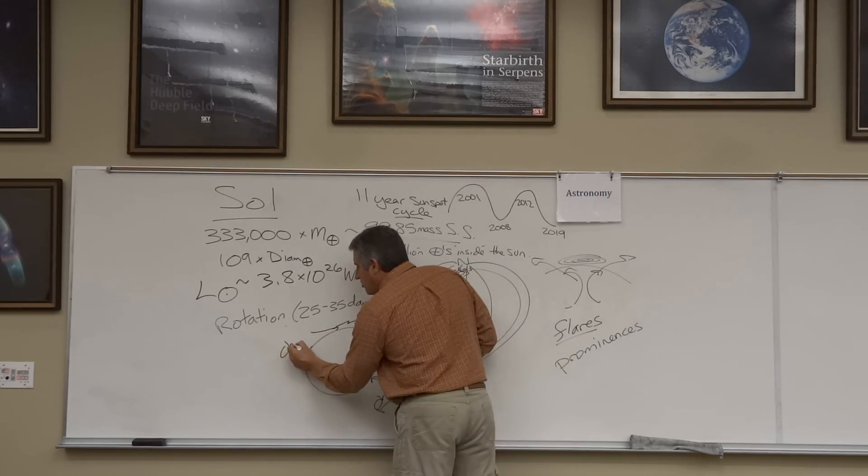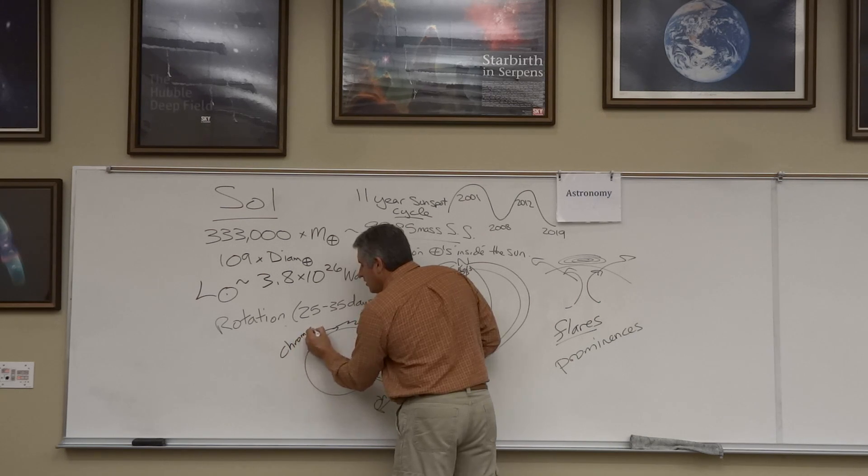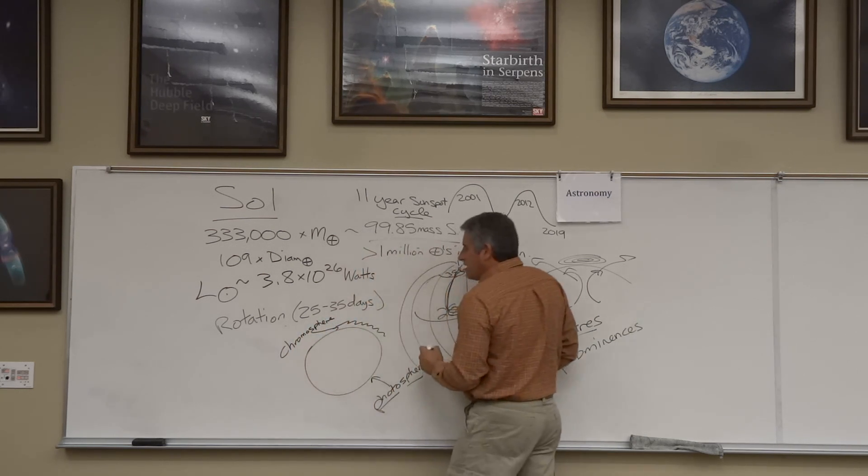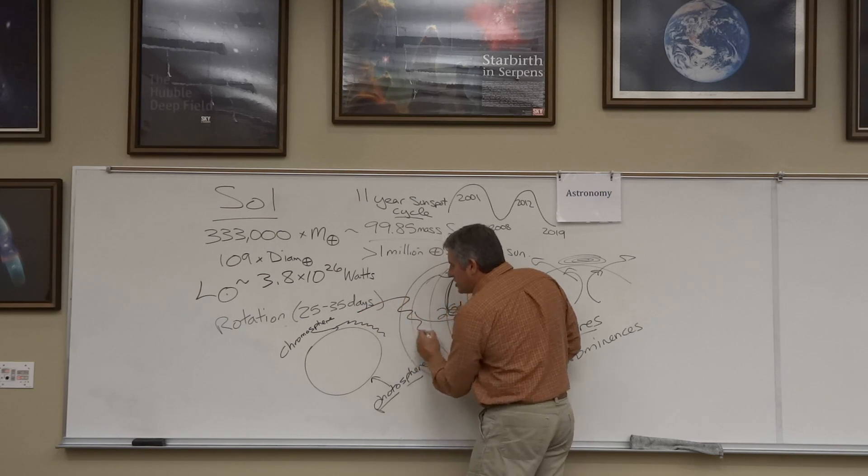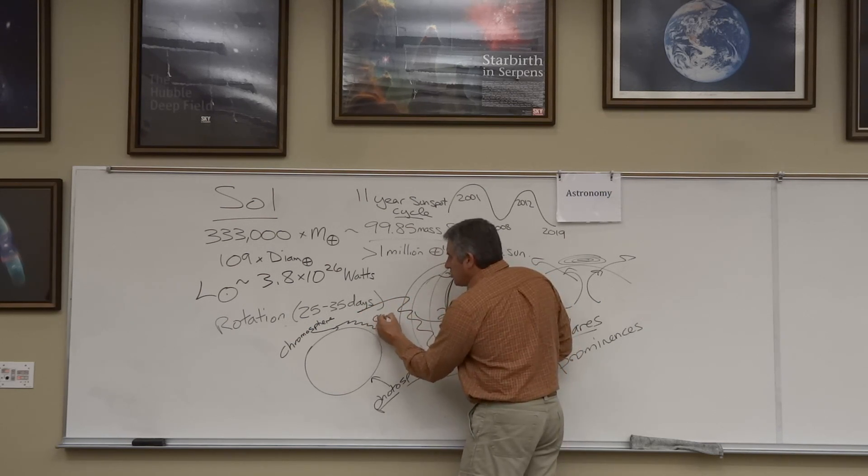The Sun has another layer a little further out, which is almost invisible except during an eclipse. That layer is called the chromosphere. And then lastly, the wispy outer edge of the Sun is called the solar corona.